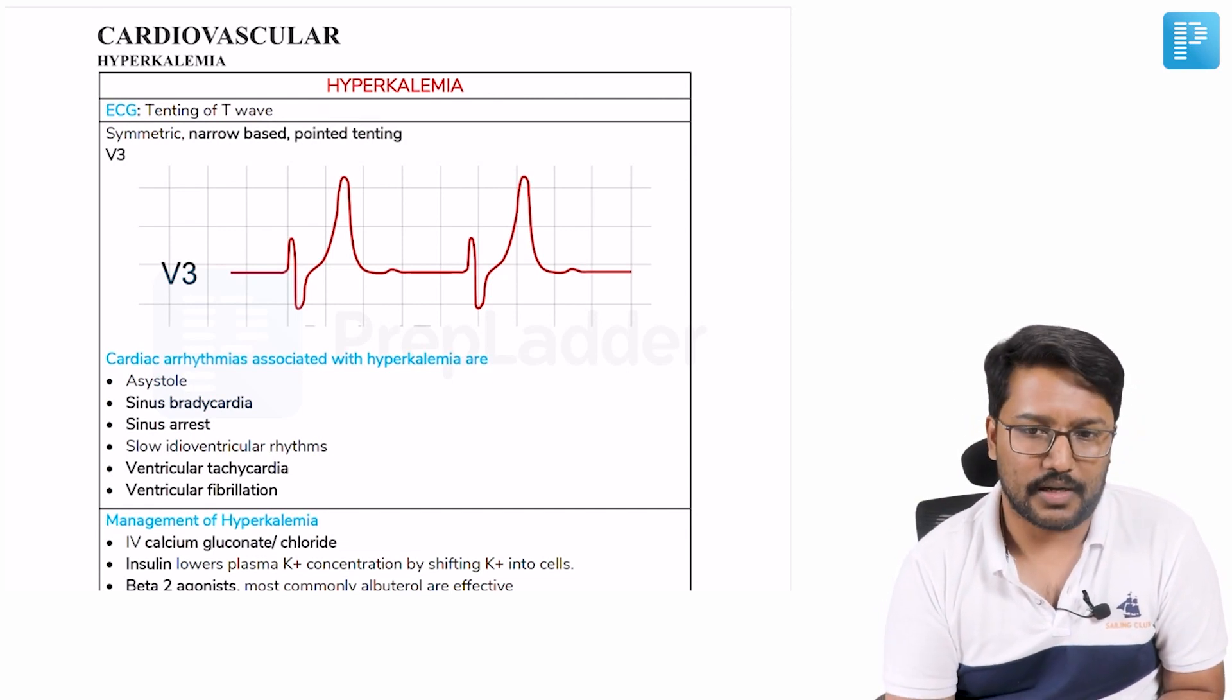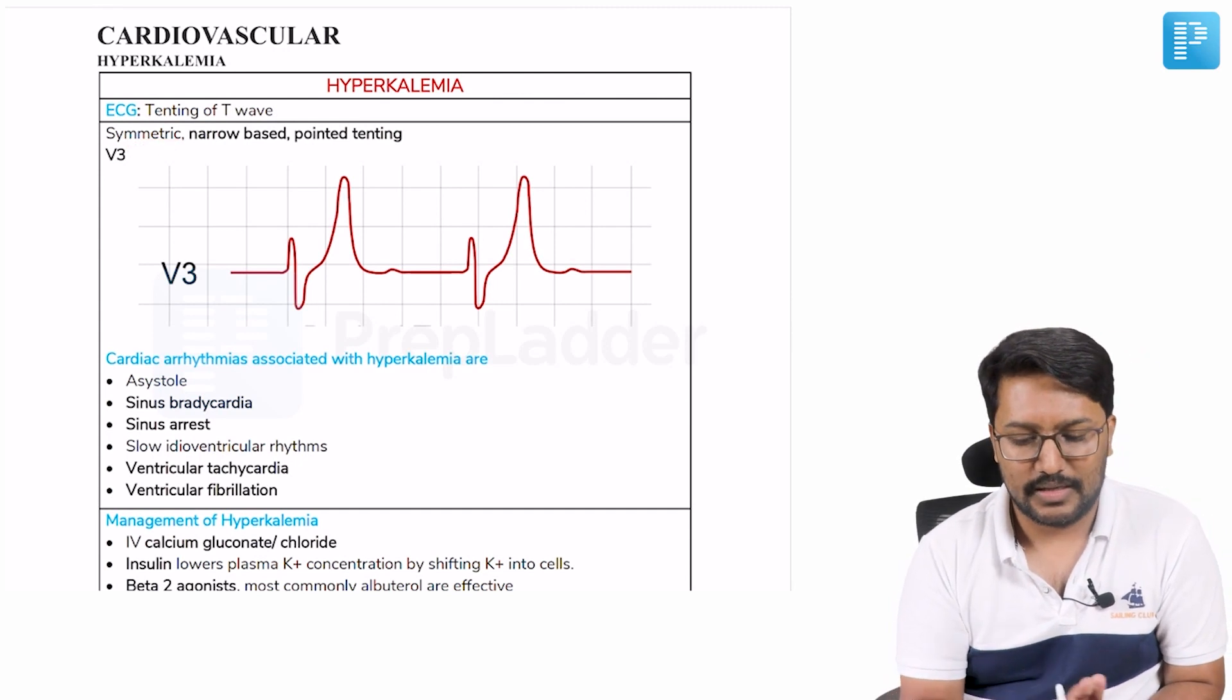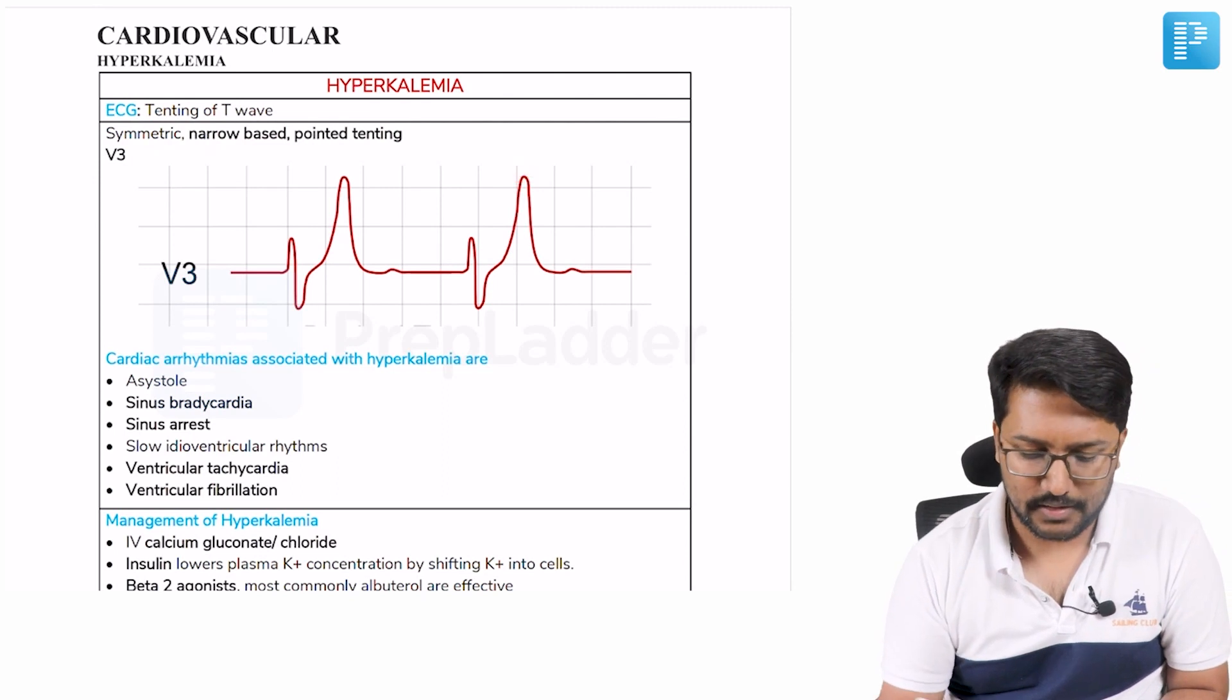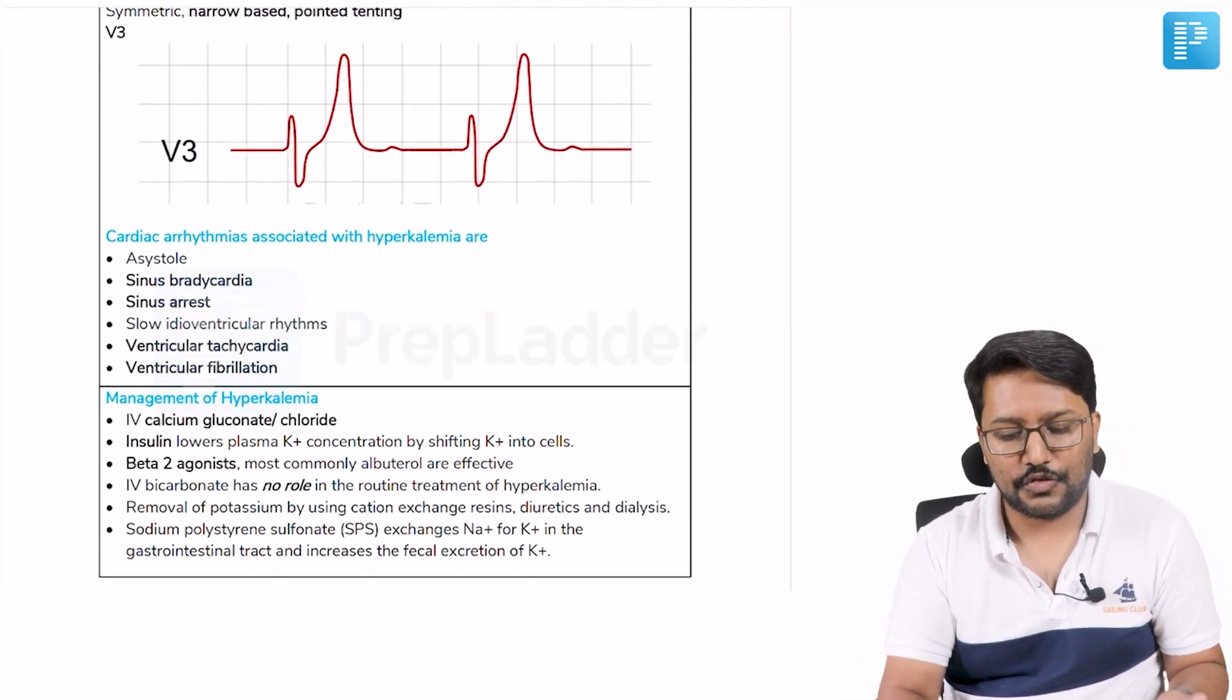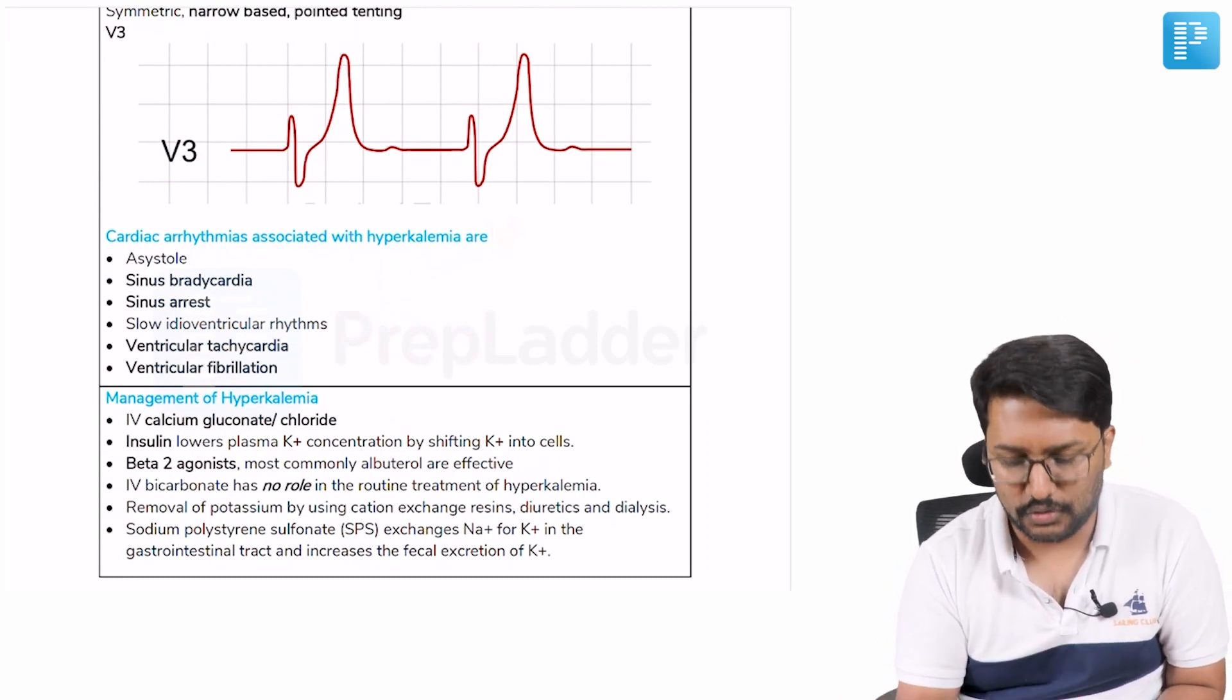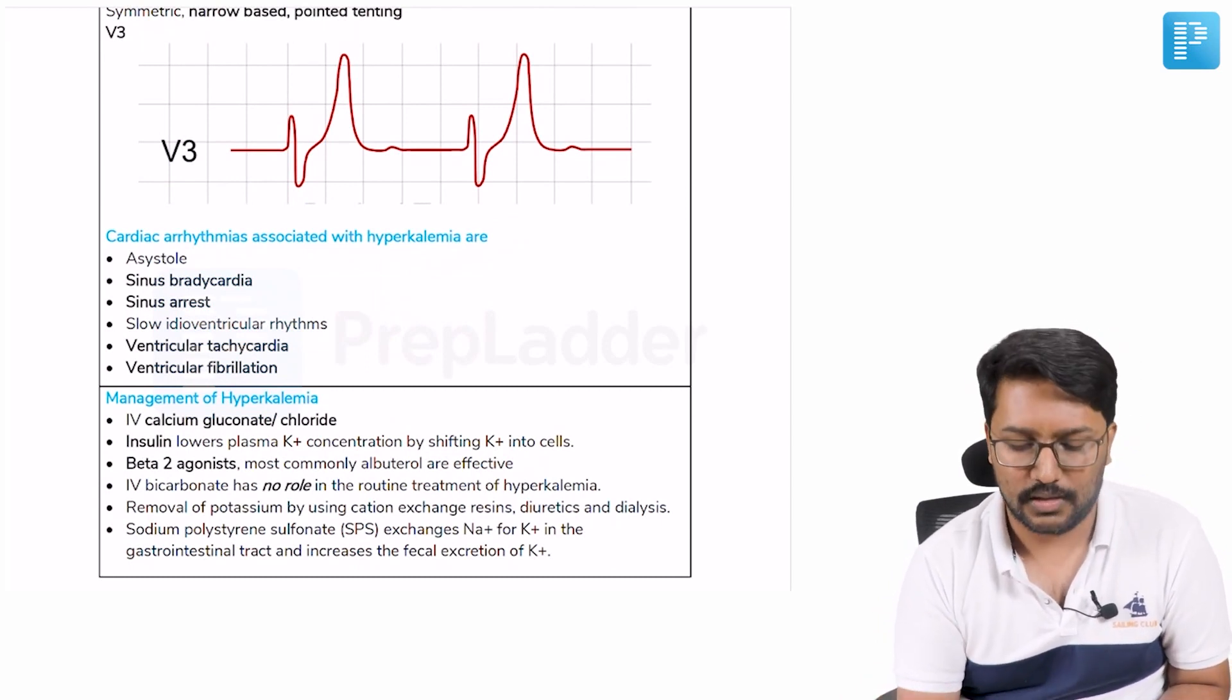These tall tented T waves will be symmetric, they are narrow based, the tenting is pointed. What else we need to know about hyperkalemia? They can ask you the arrhythmias associated with hyperkalemia. I understand for postgraduate students this is pretty basic, but basics is where we do silly mistakes too.